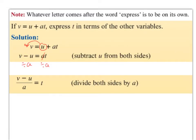If v equals u plus at, express t in terms of the other variables. So we need to get t on its own. We have v equals u plus at. We bring the u over the equal sign and it becomes minus u, so v minus u equals at. Then the a is multiplied onto the t, so the opposite is divide — we divide both sides by a. So we have (v minus u) over a equals t. Now we have t on its own.